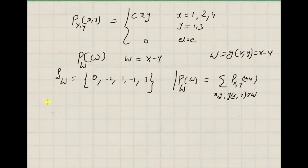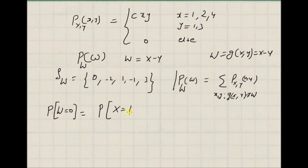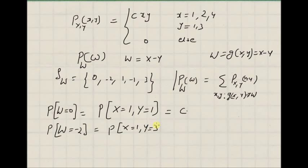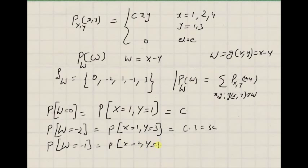To illustrate this, we will find the values of the joint mass function at each value of w. For w equal to 0, it should be equal to the joint mass function for x equal to 1 and y equal to 1, because this is the only combination that leads to w equal to 0. So we have probability of x equal to 1, y equal to 1, which is equal to c. And for w equal to minus 2, we have x equal to 1 and y equal to 3. This is the only combination that leads to w equal to minus 2, so we have c times 3, that is 3c. And the next one is probability of w equal to minus 1, which should be equal to x equal to 2, y equal to 3, giving probability of x equal to 2, y equal to 3, which is 6c.